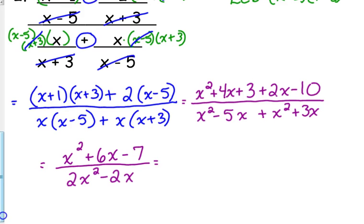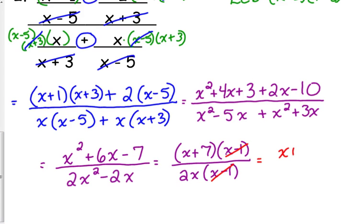The numerator factors into x plus 7 times x minus 1. The bottom has a GCF of 2x that leaves us with x minus 1. So the x minus 1s cancel, we're left with x plus 7 over 2x. No more simplifying to be done.